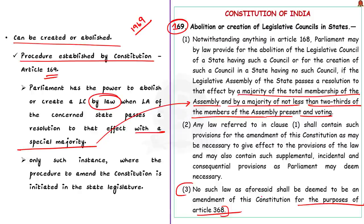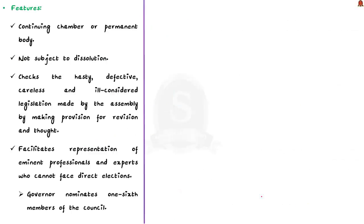Remember, it is the only such instance where the procedure to amend the constitution is initiated in the state legislature. It is initiated by passing a resolution in the state assembly, but it is up to the Parliament to either approve or disapprove such a resolution or to not take any action on it. Now, let us see some of the features of the legislative council. The legislative council is a continuing chamber or a permanent body which is not subject to dissolution like the legislative assembly. Also, this legislative council checks defective, careless and ill-considered legislations made by the assembly.